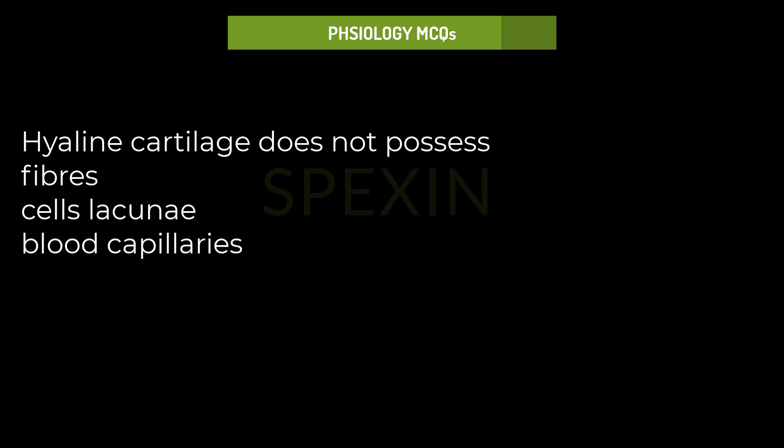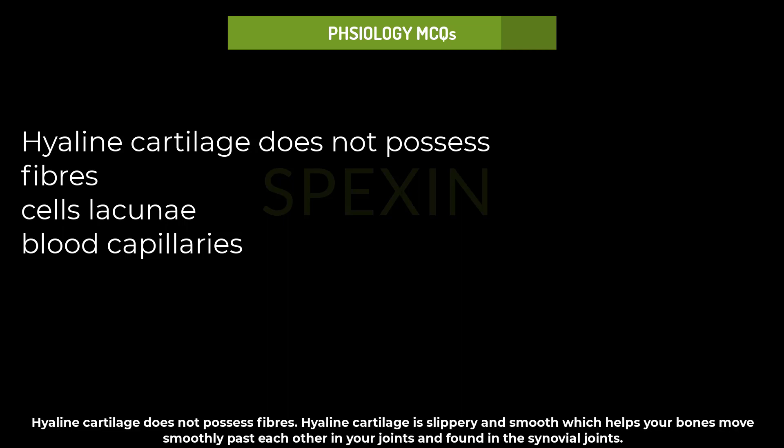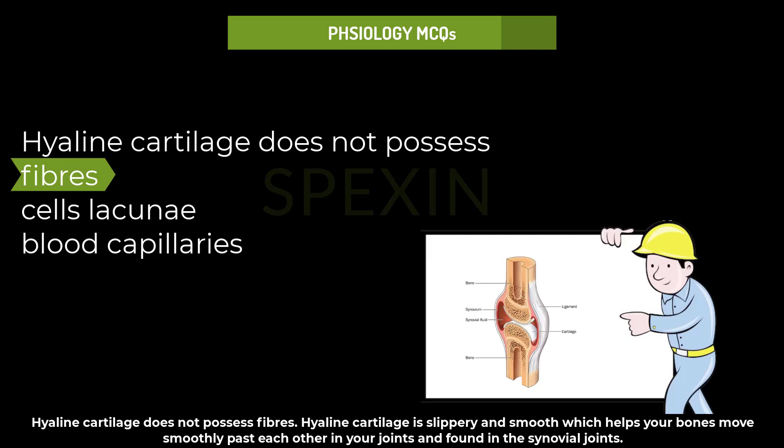Hyaline cartilage does not possess: fibers, cells, lacunae, or blood capillaries? Hyaline cartilage does not possess fibers. Hyaline cartilage is slippery and smooth, which helps bones move smoothly past each other in joints, and is found in the synovial joints.